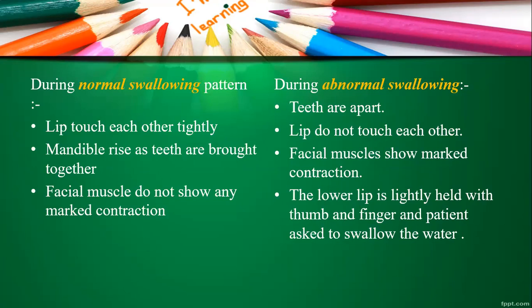How do normal and abnormal swallowing differ? In a normal swallow pattern, the lips touch each other tightly, the mandible rises as teeth are brought together, and facial muscles do not show any marked contraction. In an abnormal swallow, the teeth are apart, lips do not touch each other, and facial muscles show marked contraction. If you hold the lower lip back and ask the patient to swallow water, you can see the tongue come forward to the incisor region.